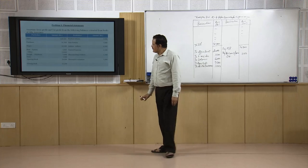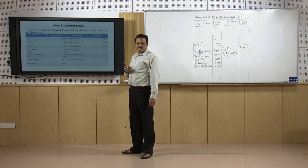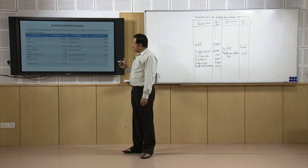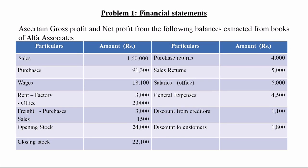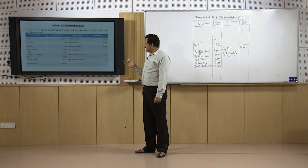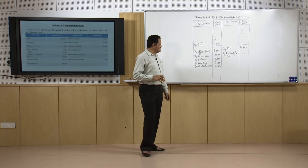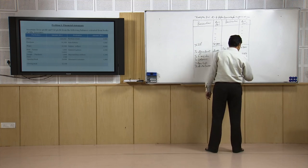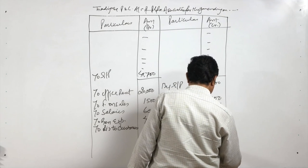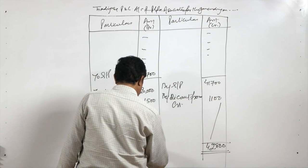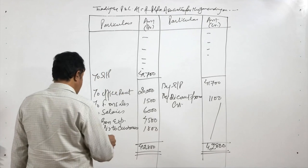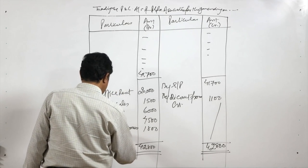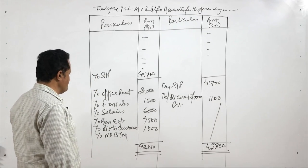We have now covered all items. In the trading account yesterday we took sales, purchases, wages, factory rent, freight on purchases, opening stock, closing stock, purchase returns, and sales returns. Today we have taken freight on sales, salaries, general expenses, discount from creditors, and discount to customers. Totaling up, the credit (income) side is 42,800 rupees and the expense side is 33,800 rupees. The account is balanced like a ledger account, giving a net profit before tax.